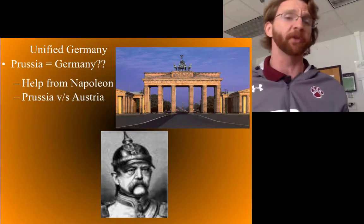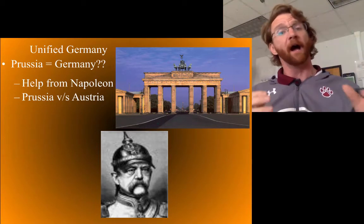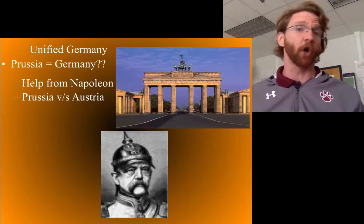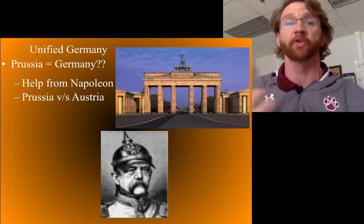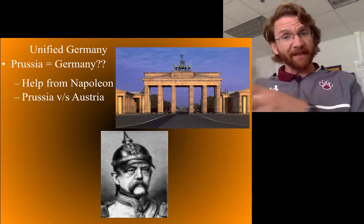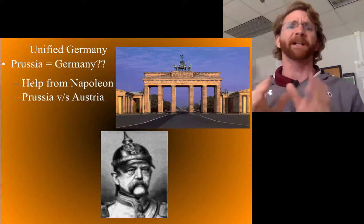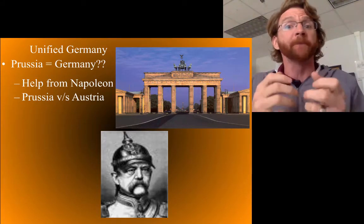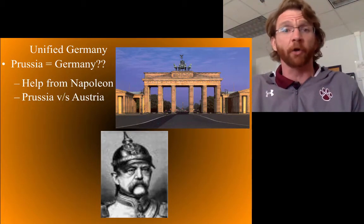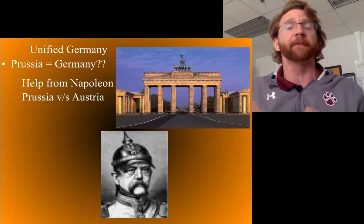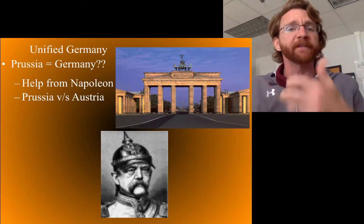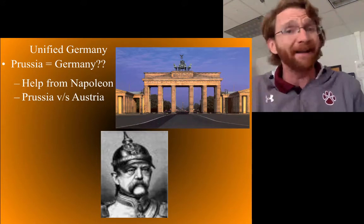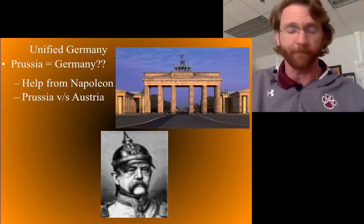The second thing you need to understand about German unification is that it is a story of Prussia versus Austria. Austria initially was the strongest German state, the strongest country that spoke German. But the problem with Austria was that the southeastern portion of the Austrian Empire was made up of a wide variety of ethnic groups, which made it really difficult for them to all unite together. Central and Northern Europe, by contrast, is predominantly Germanic — not as radically different as the people in the Austrian Empire.